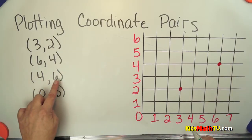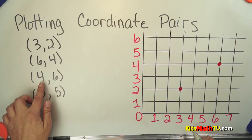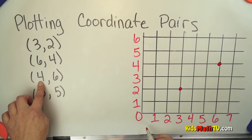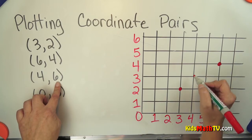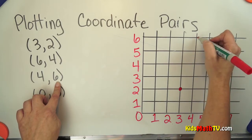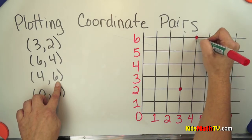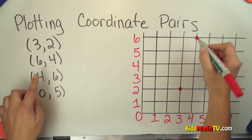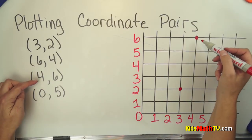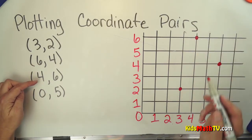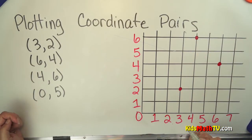These are the same numbers but they're in different order, and that affects where it gets plotted. In this case I'm going to go over to the fourth elevator and go up to the sixth floor. So six, four is over here, but the coordinate pair of four, six is up there. They're different.